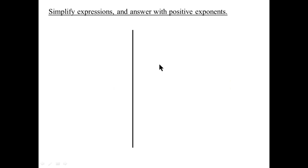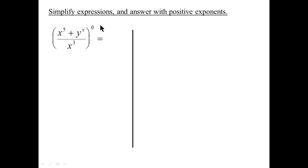Let's do some examples — simplify expressions and answer with positive exponents. We have a bracket of stuff, x to the five plus y to the x over x cubed, but the whole bracket is to the zero. So the whole thing is just the number one. In that configuration, multiply the exponents.